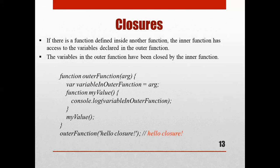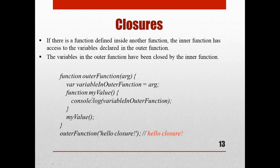The variables in the outer function have been closed by the inner function. Here you can see the example: we have a function named 'outer function' with a parameter called 'argument'. Inside the body of the outer function, we declare a variable called 'variable in outer function', assigned the value of the argument parameter. Then inside the outer function, we create another function called 'my value'.